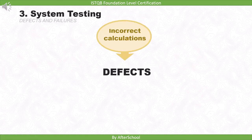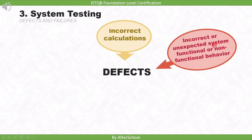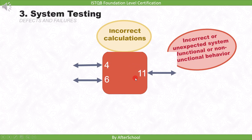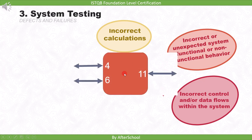Now let's look at defects in system testing. The first is incorrect calculation — for example, if a calculator system receives 4 and 6 as inputs but outputs 11, the system is calculating wrongly. The next is incorrect or unexpected system functional or non-functional behavior. If we expect output 10 but get 11, the system is not functioning as expected. Another defect is incorrect control and/or data flows within the system — if data flow issues were not caught at earlier testing levels, they can surface during system testing.